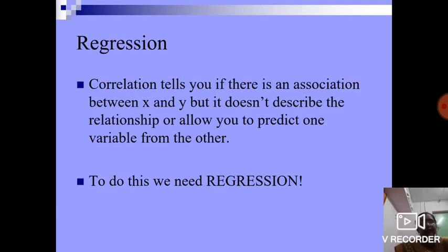Regression. Correlation tells you if there is an association between x and y, but it doesn't describe the relationship or allow you to predict one variable from the other. To do this, we need regression.